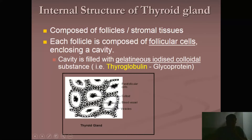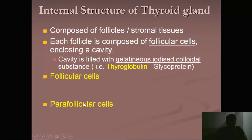We will also learn that there are cells which are outside this follicle. If cells are within the follicular tissue, they are called follicular cells. If they are outside the follicular tissue, we call them parafollicular cells. So there are two important types of cells: follicular cells within the follicular tissue, and parafollicular cells outside it. The function of these two types is different.